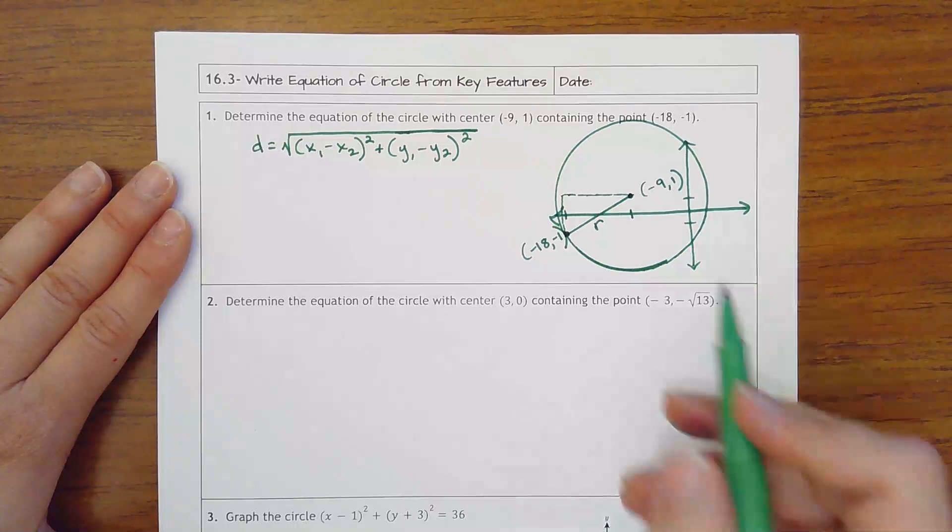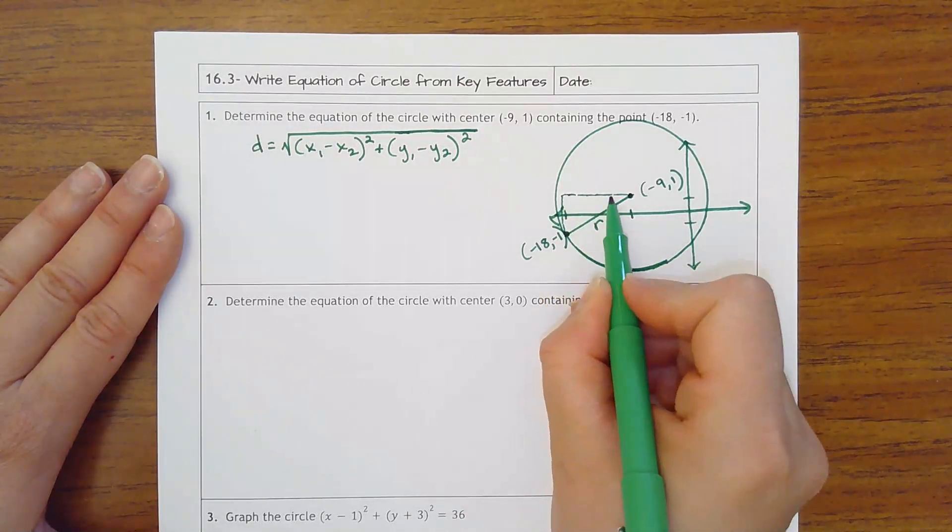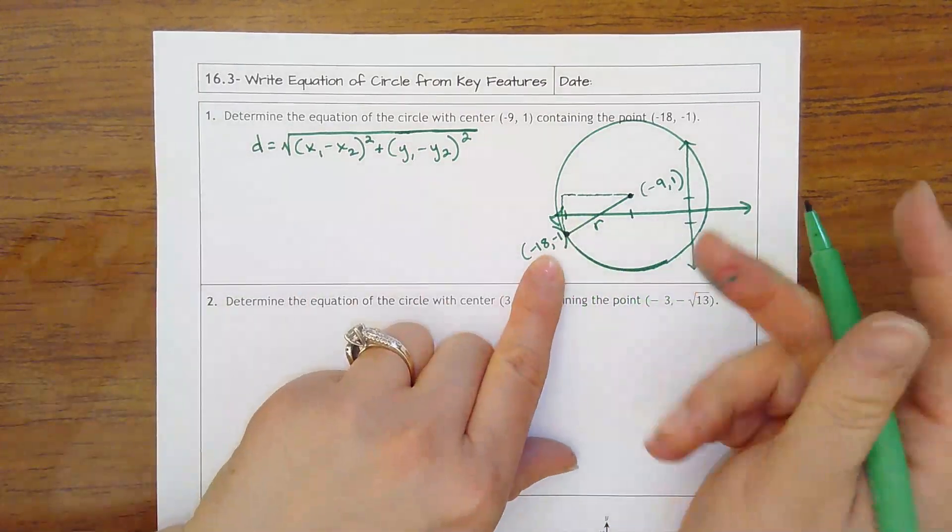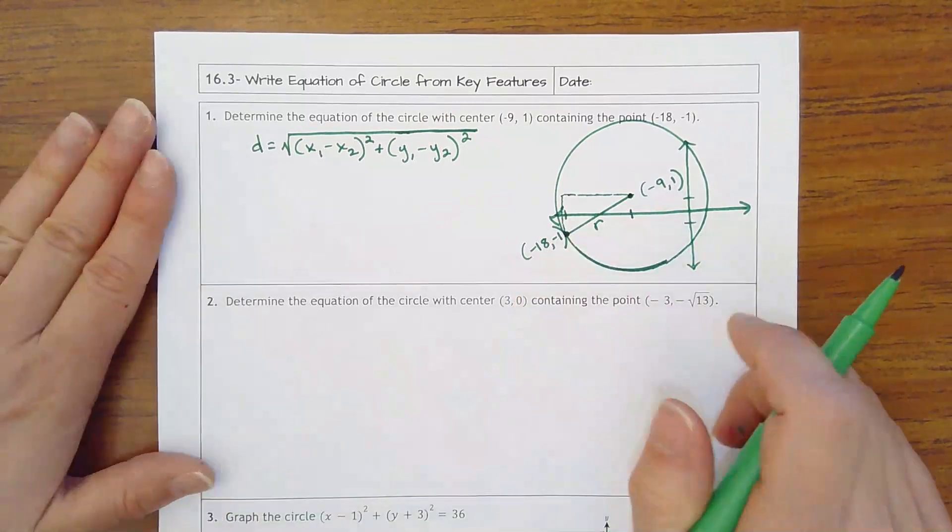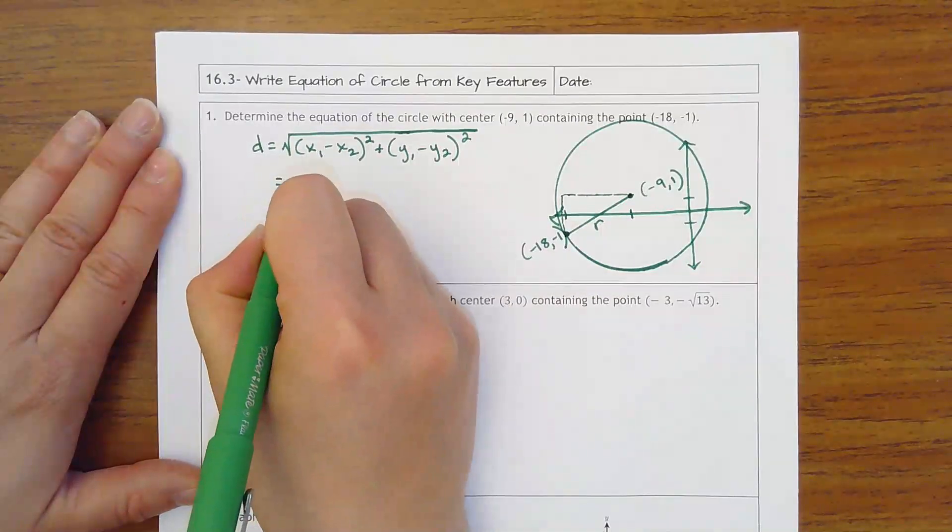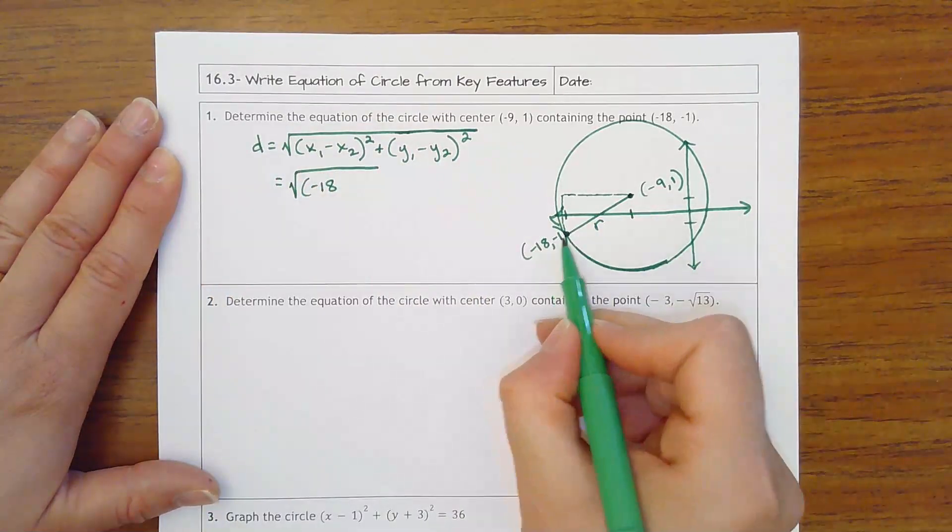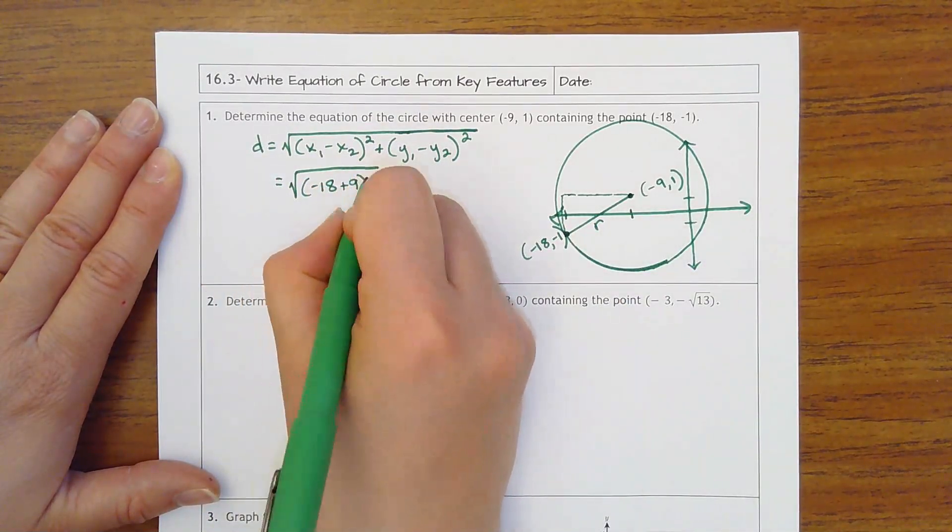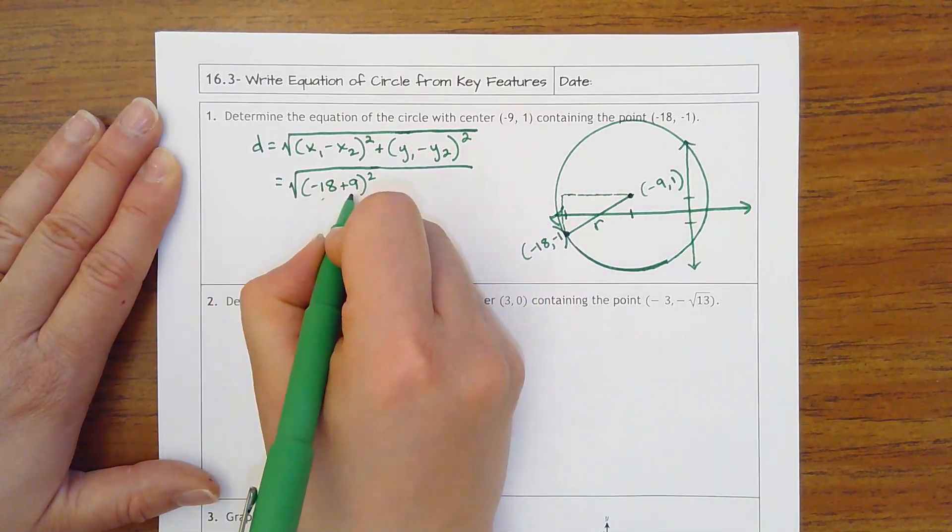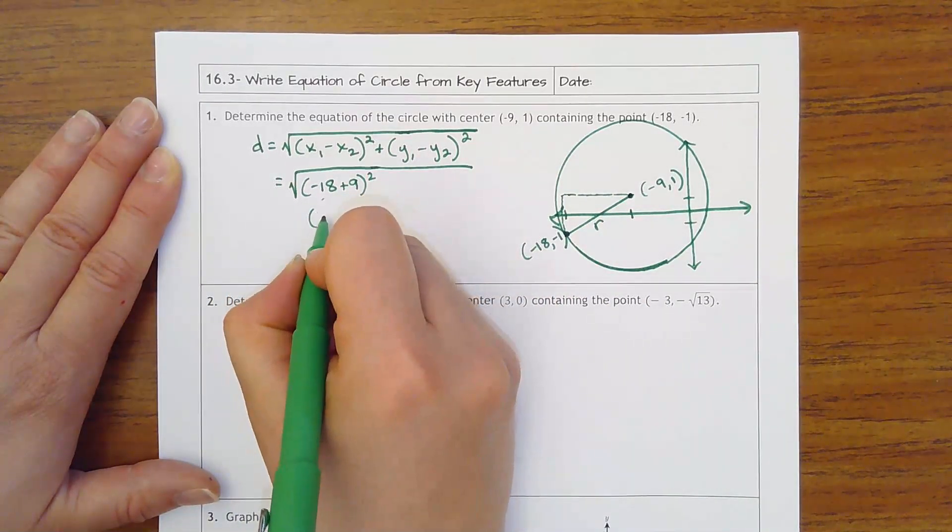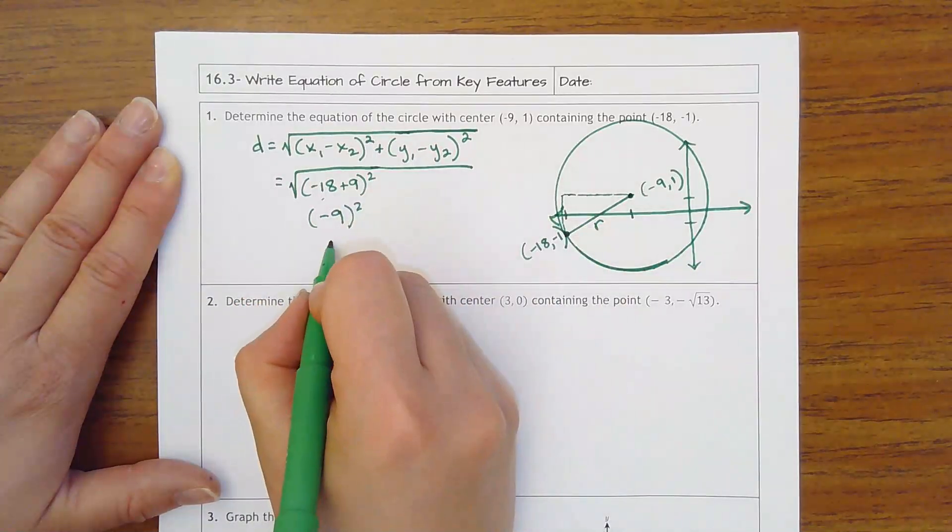So what you need to be doing is finding the distance of your x values, that would be this longer leg. You could just think about it: the distance from negative 18 to negative 9, that's a distance of 9. But what you could also do mathematically is do negative 18 minus negative 9, so that's plus 9, quantity squared. That's a sum of negative 9 squared, that will always turn into positive, so that's 81.